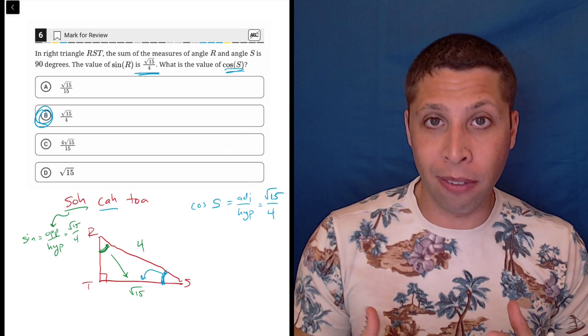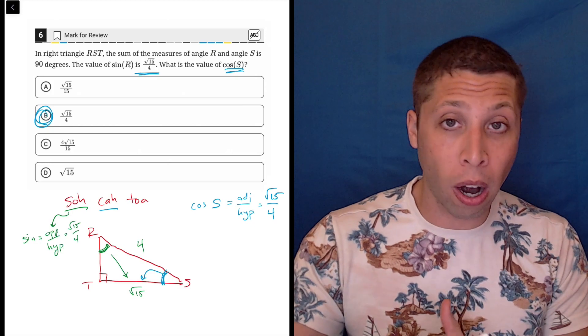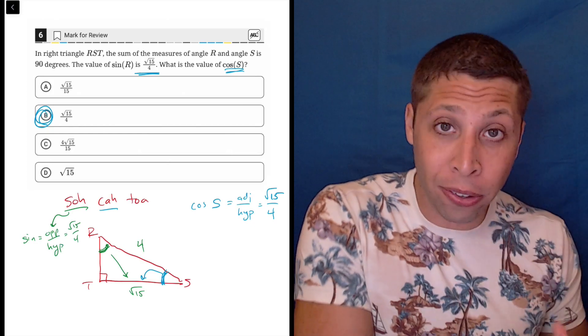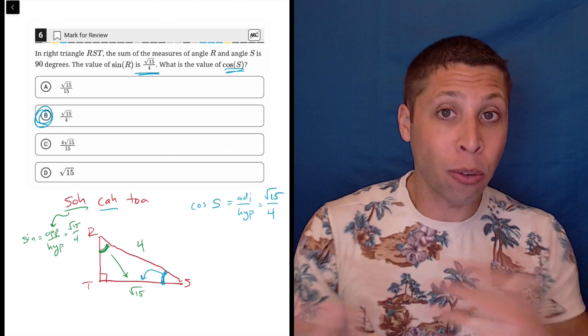Basically, the opposite of this one angle, R, is also the adjacent of the other acute angle, S. And so it kind of works out nicely.